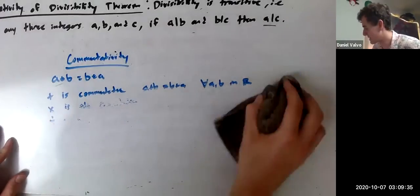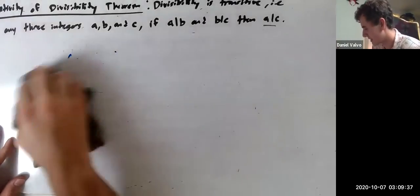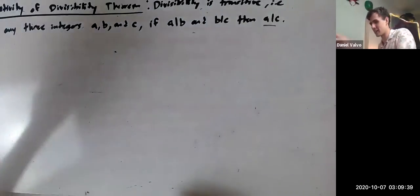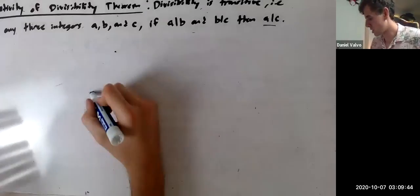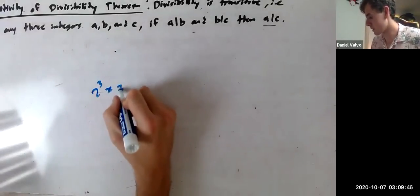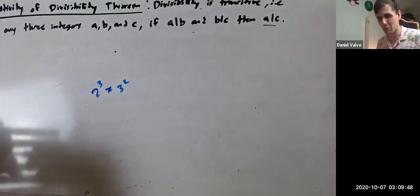Cool. Division is a counterexample of so many of these things. Does not work nicely, sadly. But also, exponentiation would be another one. For example, 2 to the 3 does not equal 3 squared. So exponentiation is not commutative.